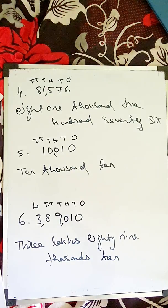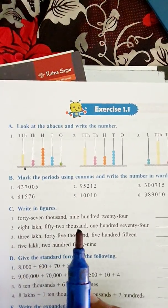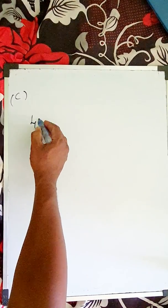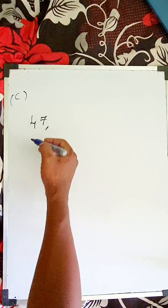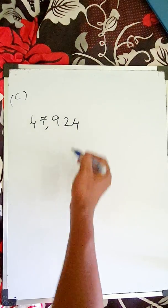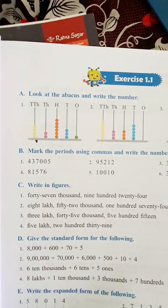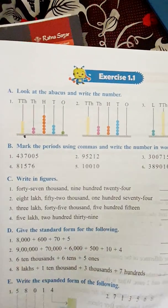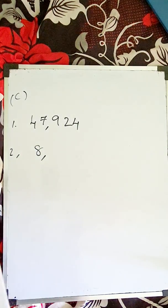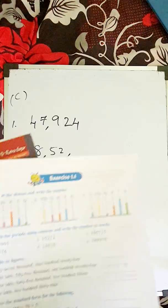For Question C, write in figures. 'Forty-seven thousand nine hundred seven twenty-four' — write forty-seven thousand, then two-number comma, nine hundred twenty-four. So: 47,924. Next: 'eight lakhs fifty-two thousand one hundred seventy-four' — eight lakhs means write eight, put comma, then fifty-two thousand, put comma.